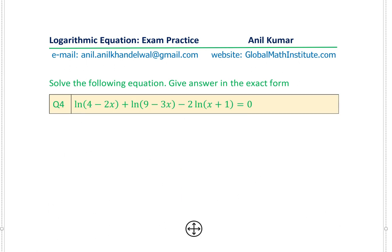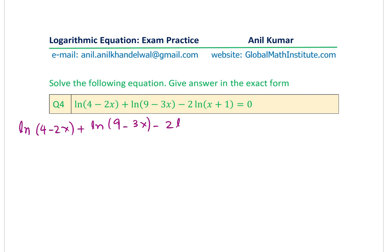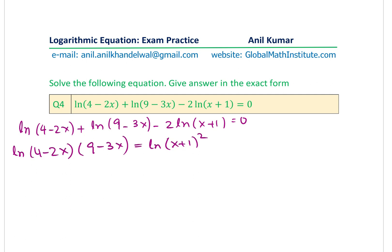Now for Question 4: ln(4−2x) + ln(9−3x) − 2·ln(x+1) = 0. The sum of logarithms means a product, so we combine: ln[(4−2x)(9−3x)] = ln(x+1)². Moving terms together and equating arguments: (4−2x)(9−3x) = (x+1)².